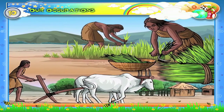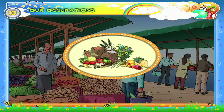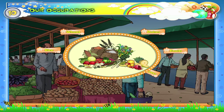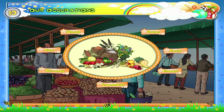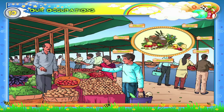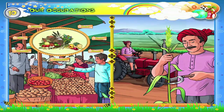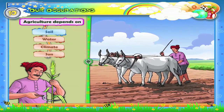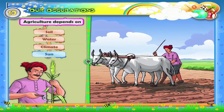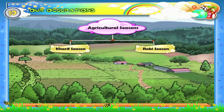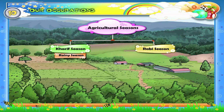Man started agriculture many years ago. We get grains like rice, wheat and pulses, fruits, flowers, vegetables and oil seeds in the market — all these are grown by the farmer. Agriculture depends on soil, water, climate and the sun. There are two agricultural seasons: Kharif season and Rabi season. Kharif season means rainy season, and Rabi season means winter season.